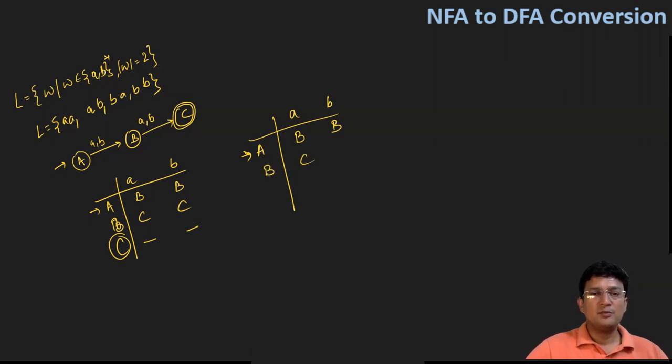So on B with small a, I move to C and a small B also moves to C. So the new state is C.